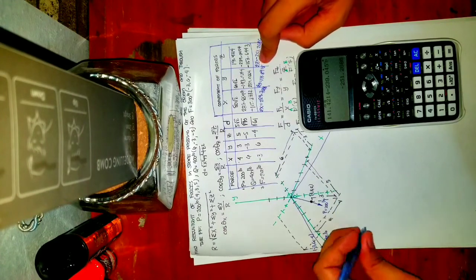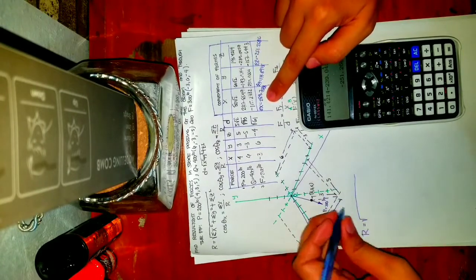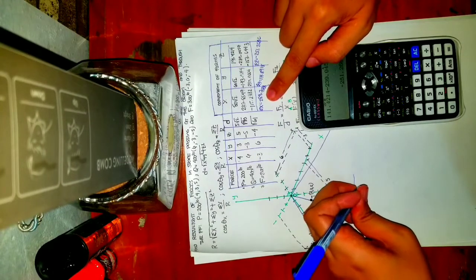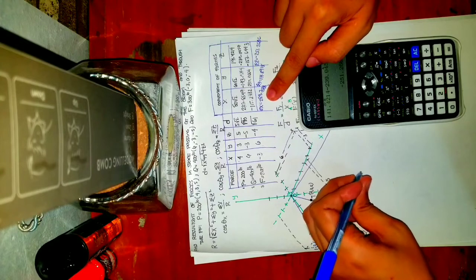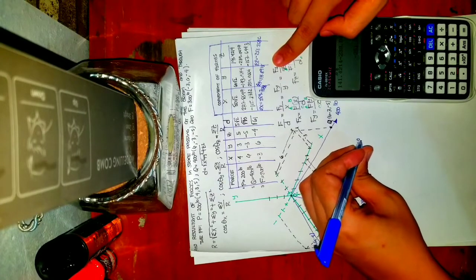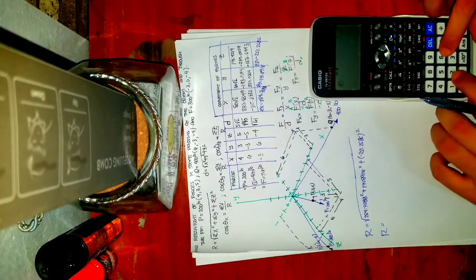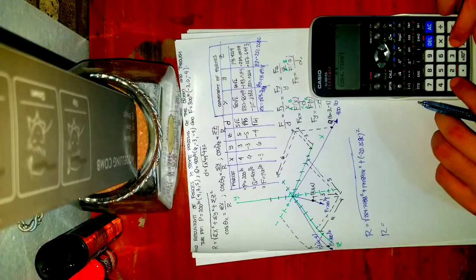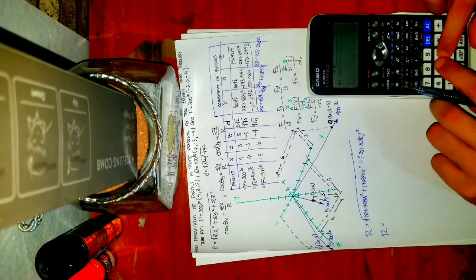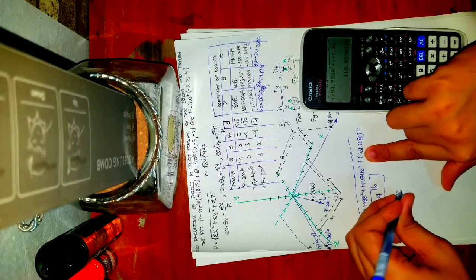We can now solve for the value of R. R = √(ΣX² + ΣY² + ΣZ²) = √(284.7588² + 171.8918² + (-251.2686)²) = 416.8576.